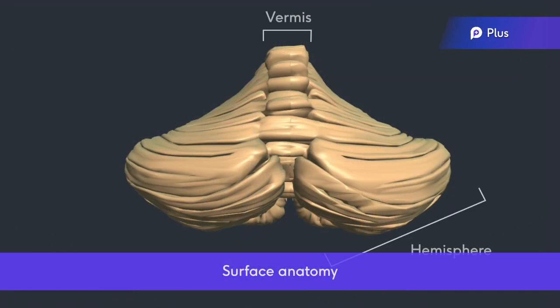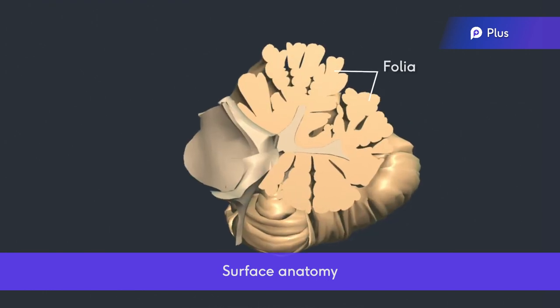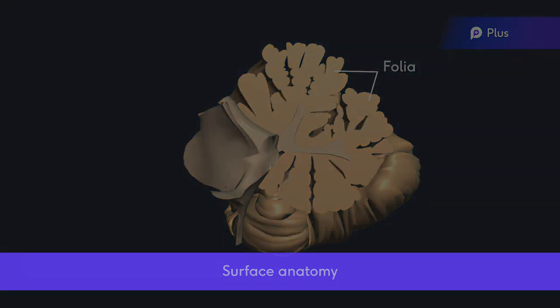The cerebellum is made up of two hemispheres joined by the vermis at the midline. The cerebellar cortex is folded extensively, with ridges called folia. The grooves of these folds help demarcate different lobes of the cerebellar cortex.